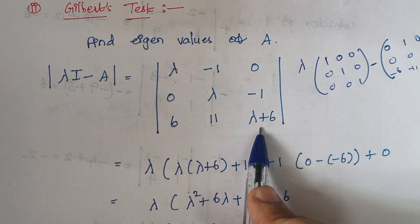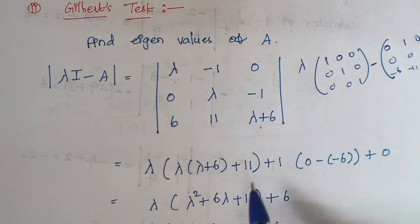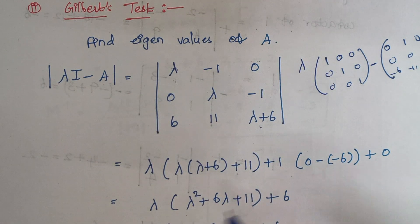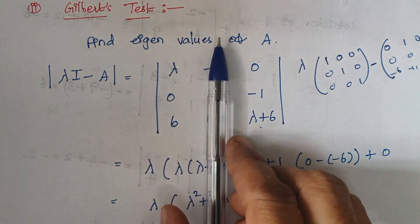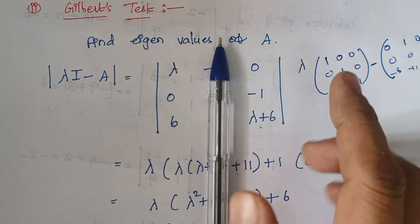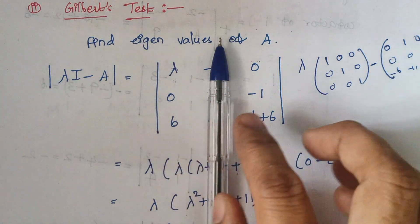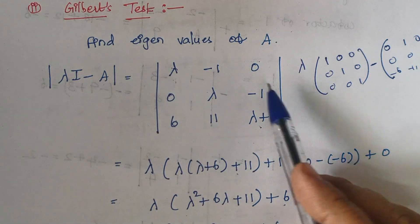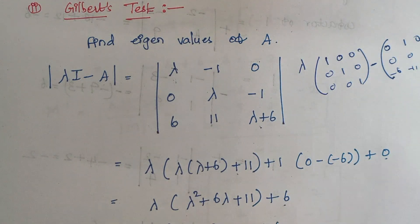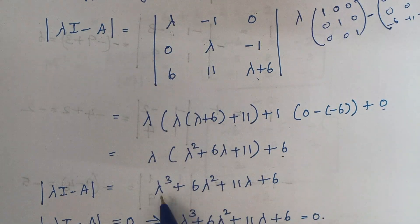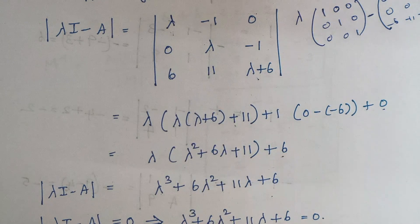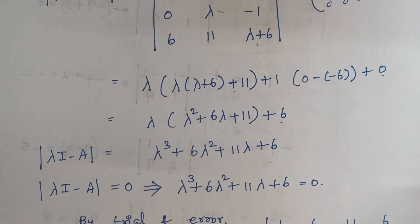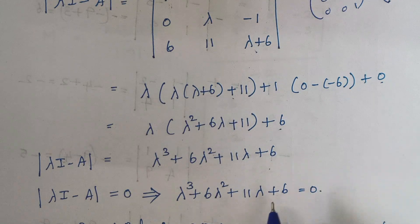Expanding the determinant: λ times (λ + 6) minus (−11) gives plus 11. Considering the −1 term, we leave that column and row: 0×(λ+6) = 0, and minus of 6×(−1) gives +6. The last element is 0. Solving, we arrive at a cubic equation.